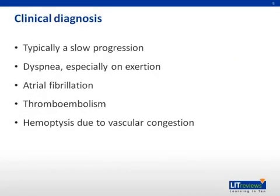Mitral stenosis typically follows a slow progression, and symptoms are related to the amount of diastolic blood flow across the mitral valve. As heart rate increases, there is a decrease in the amount of diastolic filling time and consequently flow across the mitral valve. This causes symptoms in physiologic states associated with increased heart rates, including exertion as well as other causes of tachycardia. Dyspnea with exertion is the most common symptom in presentation and is present in 70% of patients. Atrial fibrillation occurs in about 47% of patients with MS and often is associated with the development of symptoms after the loss of the atrial kick. Enlargement of the left atrium due to obstruction of flow occurs in many patients and contributes to the development of atrial fibrillation.